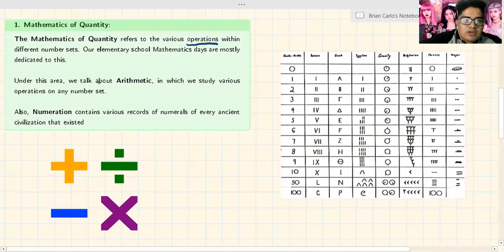Under this area, we talk about arithmetic, in which we study various operations on any number set. Arithmetic - like 2 plus 2 is equal to 4, or 5 minus 3 is equal to 2. That's what we are talking about in arithmetic.